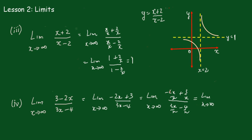And of course as x tends towards infinity, this just becomes minus 2 over 3, since the 3/x and 4/x terms go to 0. The limit of a constant is simply minus 2 over 3. Again, we could have saved ourselves the bother by just looking at the leading terms — the 3 and minus 4 won't affect anything — so we just get minus 2 over 3 as our limit.